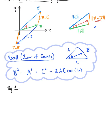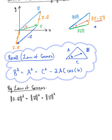So by the law of cosines, we have: the magnitude of vector v minus vector u, squared, is equal to the magnitude of vector u squared plus the magnitude of vector v squared minus 2 times the magnitude of vector u times the magnitude of vector v times cosine of theta.